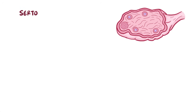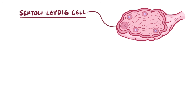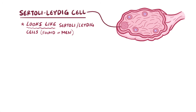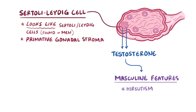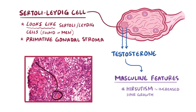The third type of tumors are called Sertoli-Leydig cell tumors because they look like Sertoli and Leydig cells normally found in men. It turns out that the tumors are actually made of primitive gonadal stroma, which is so undifferentiated that the cells can secrete androgens like testosterone. Increased levels of testosterone can cause women to have more masculine features, like hirsutism, which is increased hair growth. Under the microscope, classically there will be Reinke crystals, which are pink rod-like crystals in the cytoplasm of the cells.